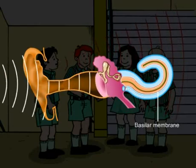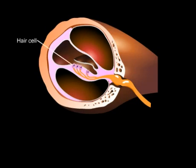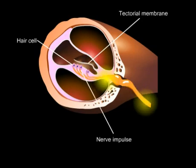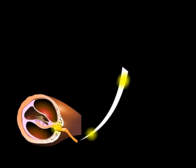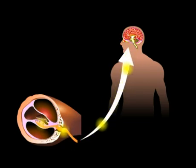In the cochlea, this movement causes the hair cells to bend and press against the tectorial membrane. As a result, nerve impulses are generated which reach the brain through the afferent neurons. The brain analyzes the nerve impulses and interprets them as sound.